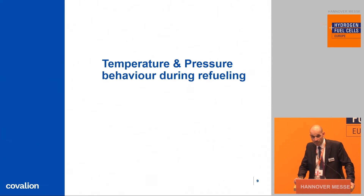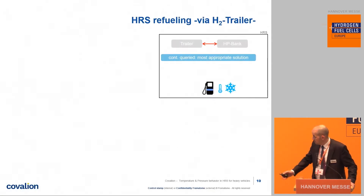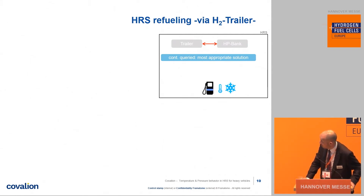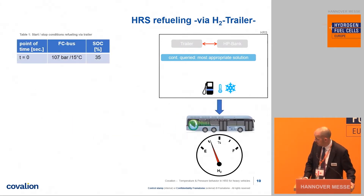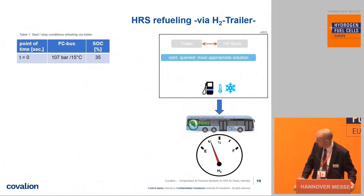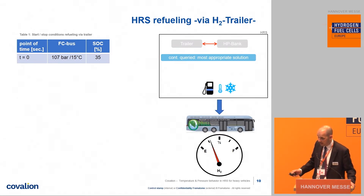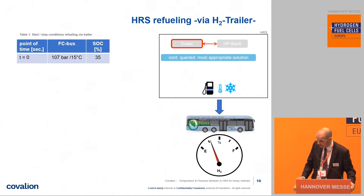Now let's look at the temperature and pressure behavior during the refueling. Here you can see a representation of our hydrogen refueling station. When a bus arrives, it is connected to the dispenser unit via a nozzle, and we determine the SOC level — the state of charge — as well as the temperature and the pressure inside the bus. In this model, it's about 35%, which means 107 bar at 15 degrees, and the target is to reach 95% SOC. The software continuously checks which is the most efficient way to refuel the bus. It determines that hydrogen from the trailer is the most efficient way, switches all the valves to the trailer, and we start the refueling.